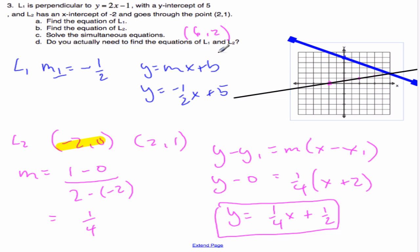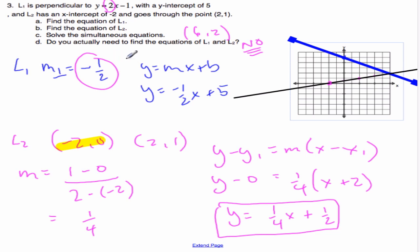Now, do you actually need to find the equations of L1 and L2? For L2, if I plot the two points and connect them, I don't actually need the equation. For L1, I have the slope — negative 1 half — and the y-intercept, so I could go straight from that information. The answer is no — you have enough information already. Combining all the ideas we've been learning about lines, we can still solve simultaneous equations.